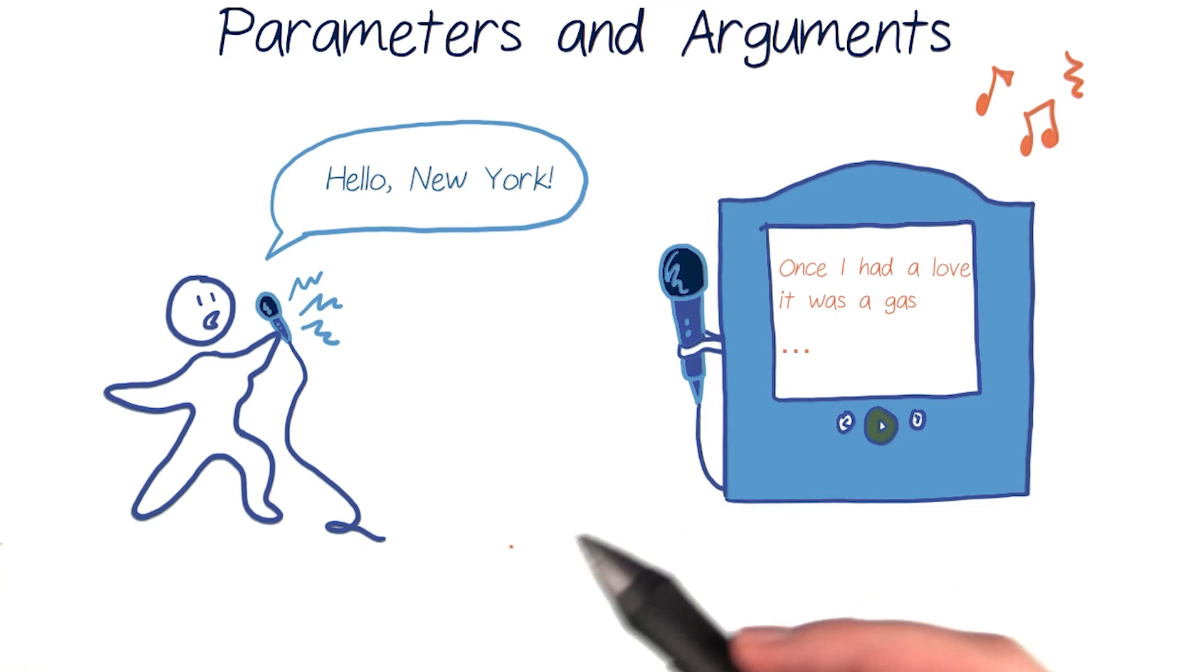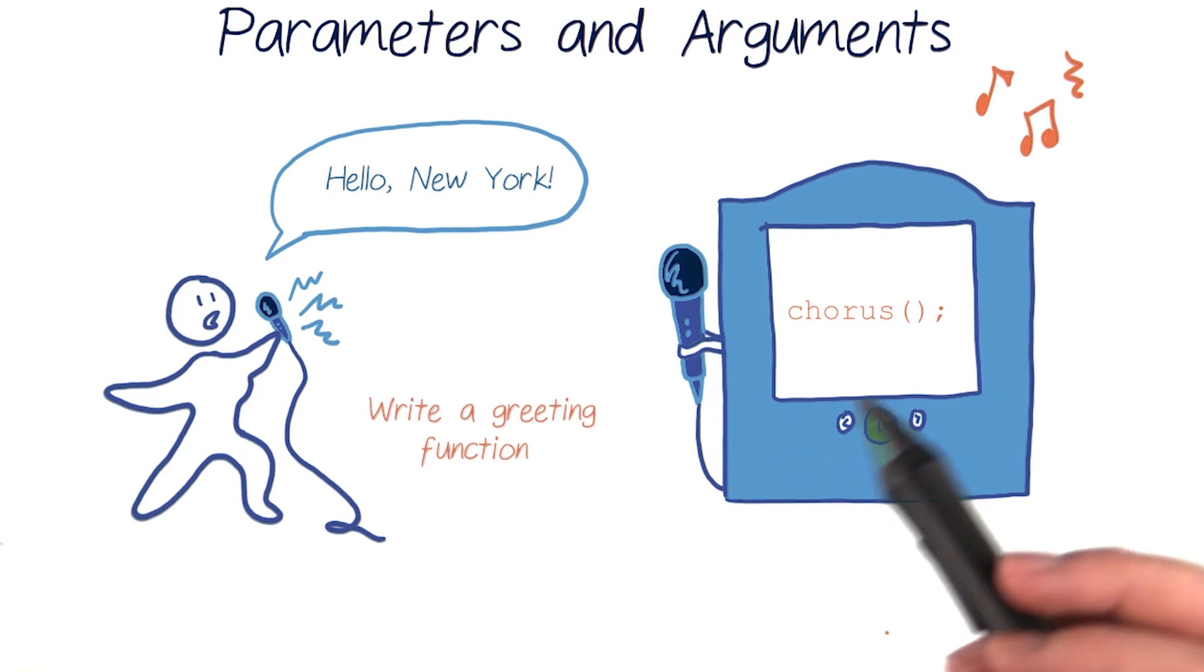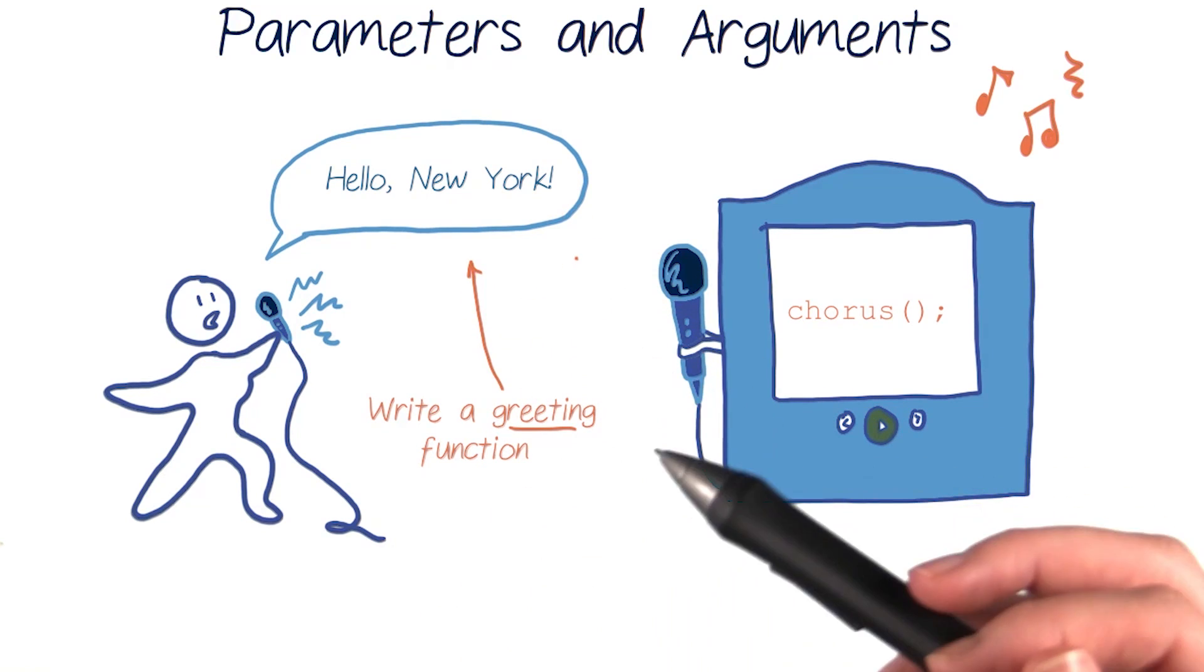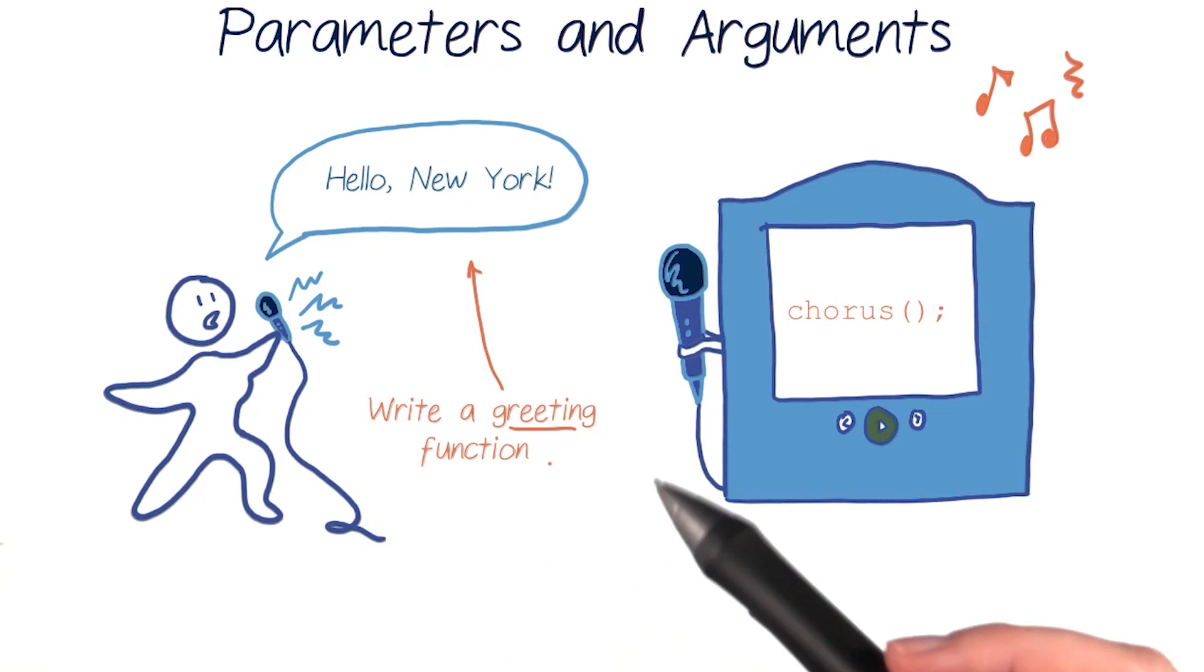We've been working on our karaoke program and can have it print out songs and choruses pretty easily. But now we want to improve our code by including a greeting at the beginning of each song. When musicians are on tour, they'll often say hello to each city or place they perform in. They'll say hello New York or hello Mexico City, and that's what we want our greeting function to do.